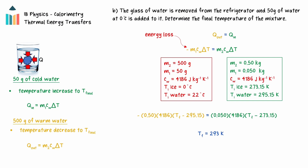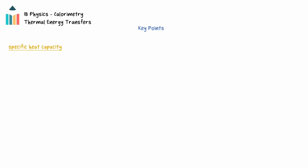Note the required unit conversions before the substitution. In summary, the specific heat capacity of a substance is the energy required to change the temperature of one kilogram of the material by one unit of temperature, either Celsius or Kelvin. It has the symbol lowercase c and units of joules per kilogram Kelvin. The specific latent heat of a substance is the energy required to change the phase of one kilogram of the material. It has the symbol capital L and units of joules per kilogram.